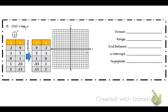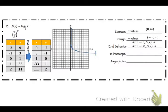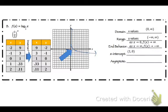Those are the values to graph: (9, −2), (3, −1), (1, 0), (0.33, 1), (0.11, 2). Domain is 0 to infinity. Range is negative infinity to positive infinity. End behavior: as x goes to 0, f of x goes to positive infinity; as x goes to infinity, f of x goes to negative infinity. The x-intercept is (1, 0). The asymptote is x equals 0.